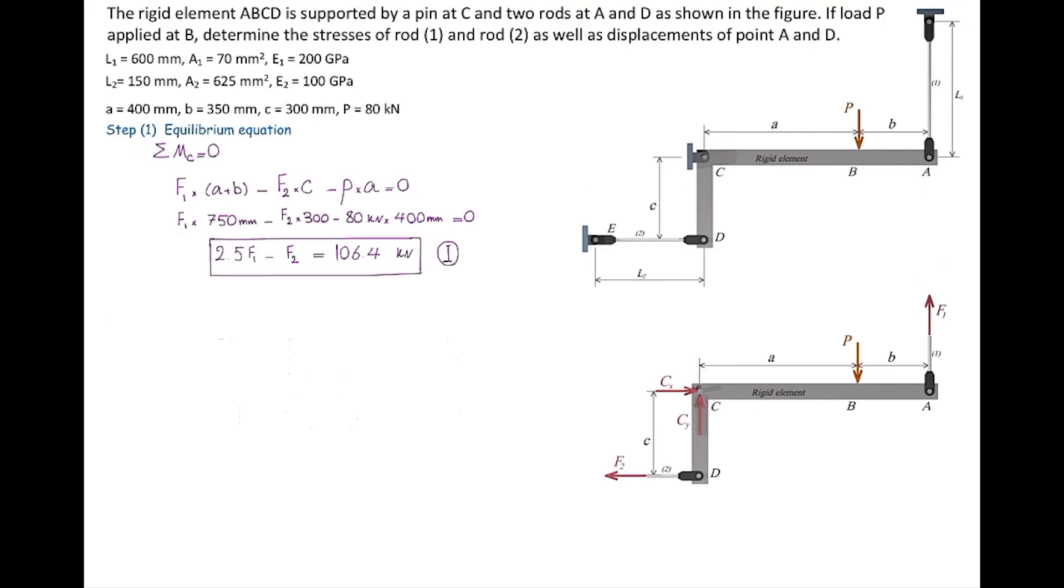There are four steps for solving indeterminate problems. We've done the first step. The second step is writing down the deformations in terms of force. F multiplied by L divided by EA gives us the deformation, the FL equation. So delta 1 is FL over EA using the values for element 1. F1 is unknown. That simplifies to F1 divided by 23,333. This gives a relationship between deformations and force in that element. We repeat for element 2, finding another relationship between F2 and delta 2.